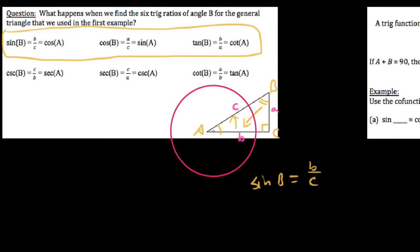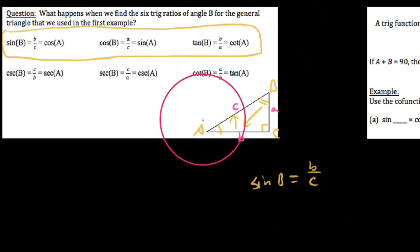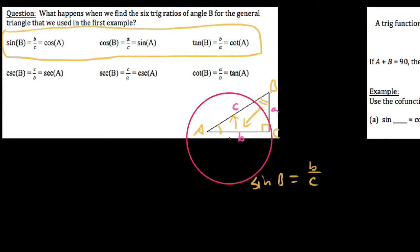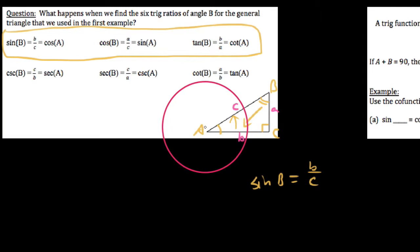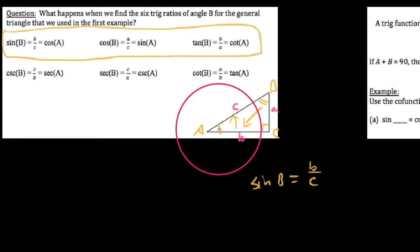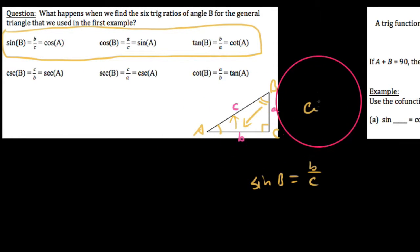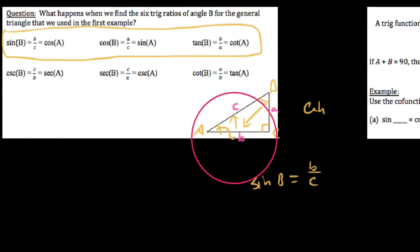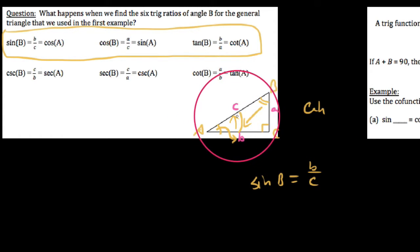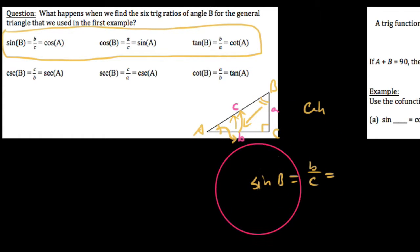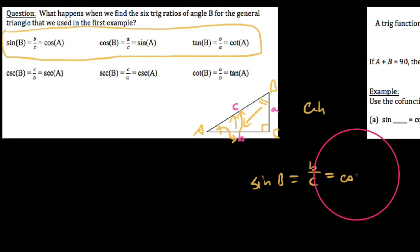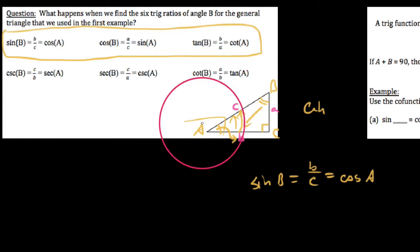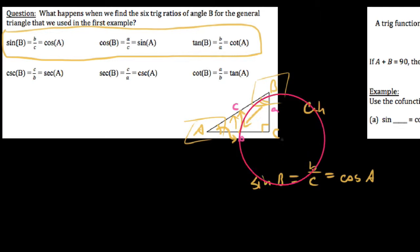The interesting thing is this: if we took the sine of angle B, we get b over c — opposite over hypotenuse. But if we go to the other acute angle and find the cosine of A — adjacent over hypotenuse — adjacent to angle A is b, and hypotenuse is c. So we get the same thing. The cosine of A equals the sine of B — the cosine of one angle equals the sine of the other.